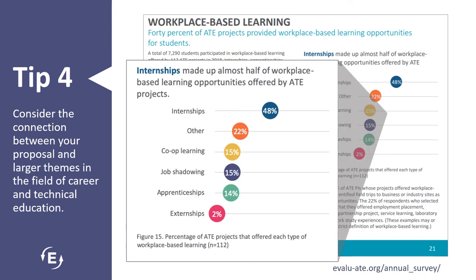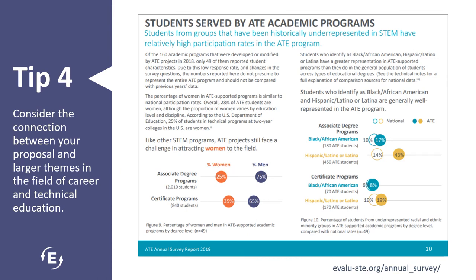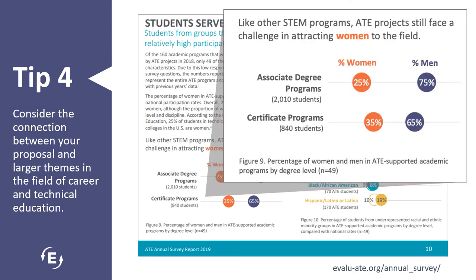As shown here, almost half of ATE projects that provided workplace-based learning opportunities for students did so in the form of internships, with only 14% offering apprenticeships and 2% offering externships. Recruiting and maintaining engagement of women and students of color in STEM is also an area of need and a priority. For example, the proportion of male students in certificate and associate degree programs in 2018 outpaced female students. Broadening participation in STEM for underrepresented groups is an important initiative for NSF — consider how your proposal speaks to this issue and others addressed throughout the ATE survey report.